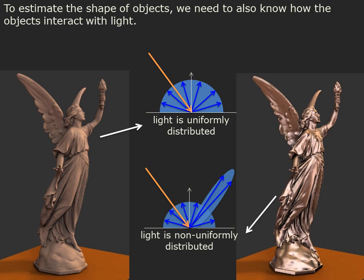The first step is to understand how objects interact with light. The object on the left scatters light uniformly, hence its appearance as a matte finish. The object on the right, however, concentrates light in certain directions and this leads to distinctive shine.